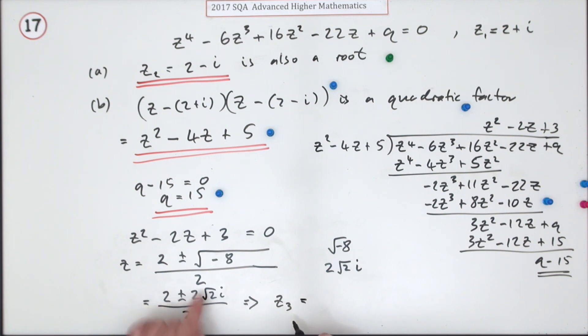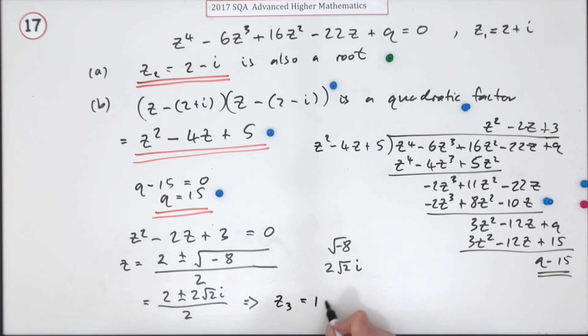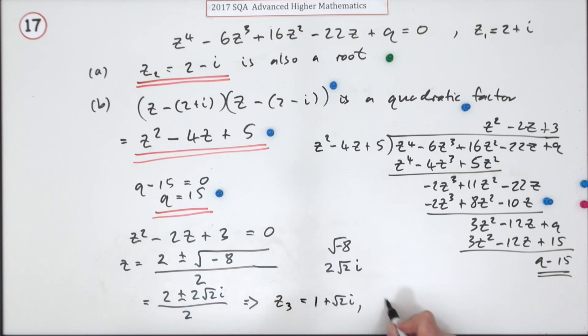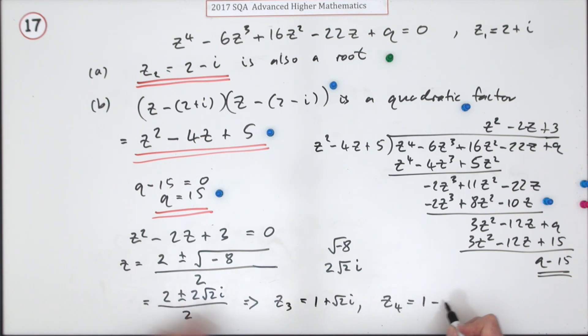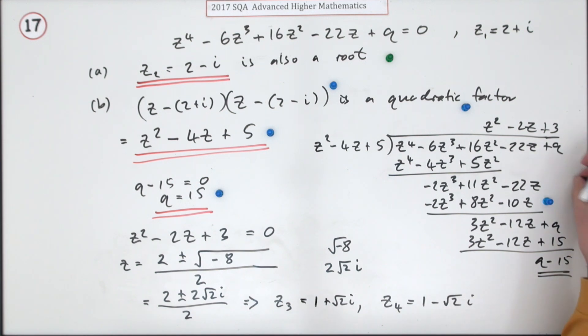Everything divides by 2, giving z₃ = 1 + √2 i and z₄ = 1 − √2 i. That's the last mark for part b.